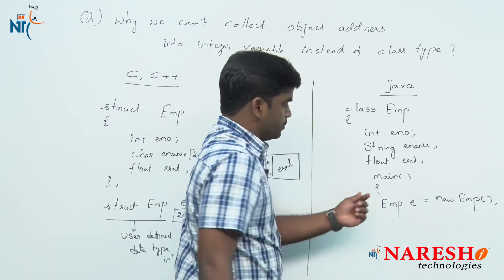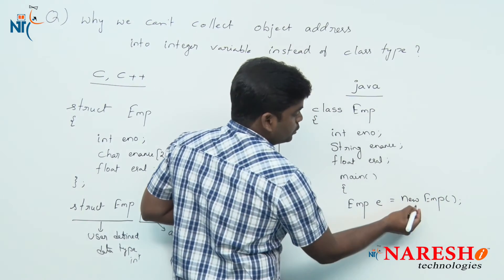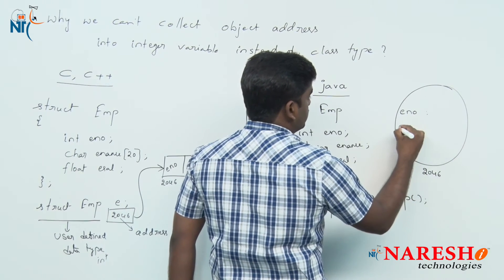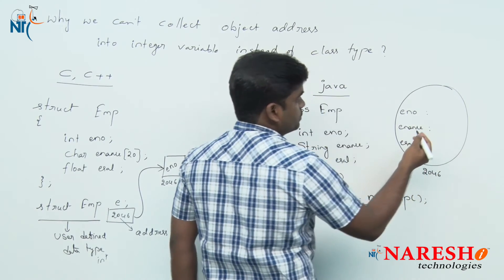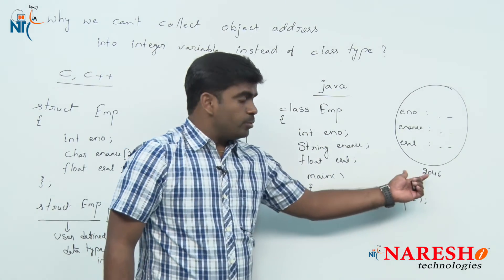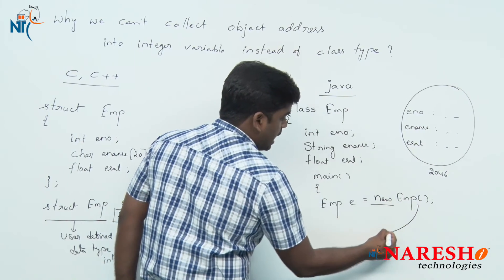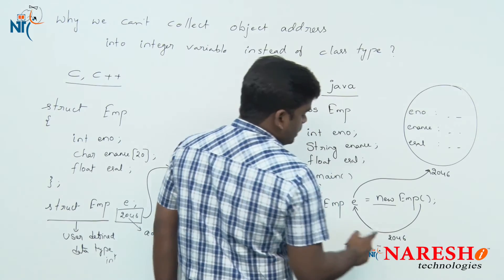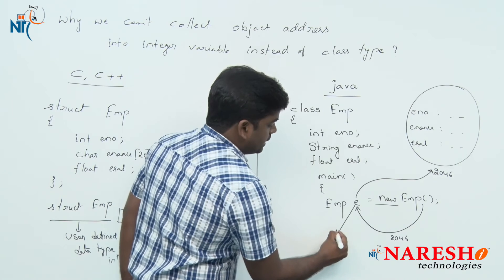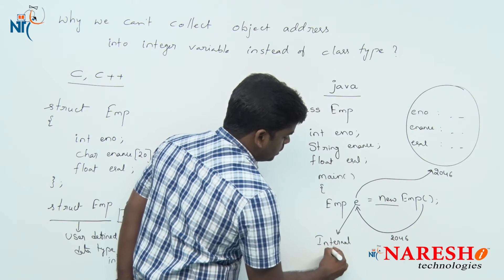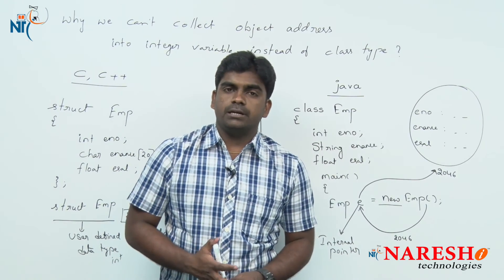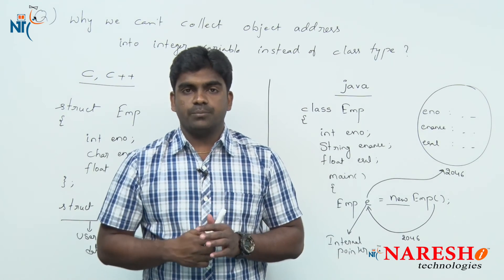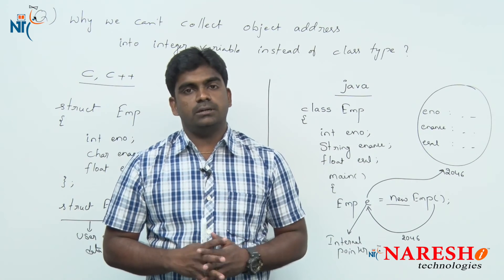In Java as well, the new operator creates an object at some memory location, non-static variables get memory allocation and are initialized with default values. Once memory is allocated, the constructor returns that address, which is collected into 'e', and 'e' starts pointing to that location — say 2046. So 'e' is holding an address, making it an internal pointer variable. People say Java does not support pointers, but this reference variable is a pointer in Java, pointing to a memory location.